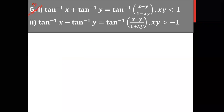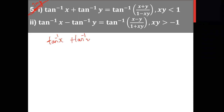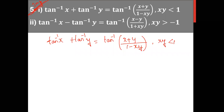This next property is very important — they repeat this question every time in the annual exam. Either tan inverse x plus tan inverse y equals tan inverse of (x+y)/(1-xy), or tan inverse x minus tan inverse y equals tan inverse of (x-y)/(1+xy). They repeat this again and again. We have to prove: tan inverse x plus tan inverse y equals tan inverse of (x plus y) divided by (1 minus xy), where xy must always be less than 1.